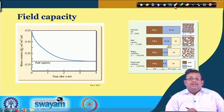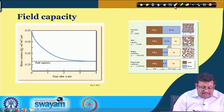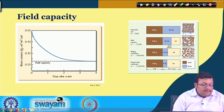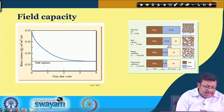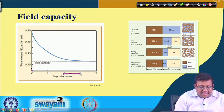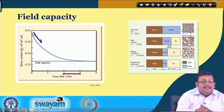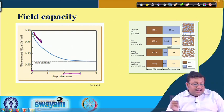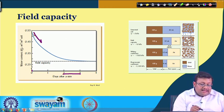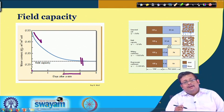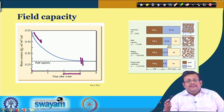A plot of days after rainfall versus volumetric water content illustrates this process. Just after rainfall (day 0) the highest water content is present because all pore spaces are filled. The water content then declines, and after approximately 2 to 3 days it reaches field capacity. Generally after a flush of rainfall it takes around 2 to 3 days of drainage to attain a moisture content equivalent to field capacity.